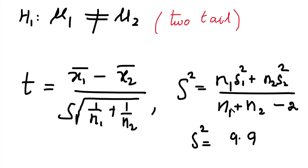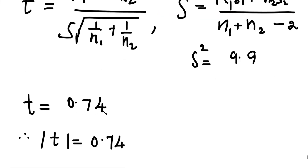Substituting all the values we have and simplifying, S squared comes out to 9.9. Then substituting S, x̄1, x̄2, n1, and n2 into the t formula, the calculated value of t is 0.74. We take the modulus value because sometimes t can be negative. So the calculated value of t is 0.74.